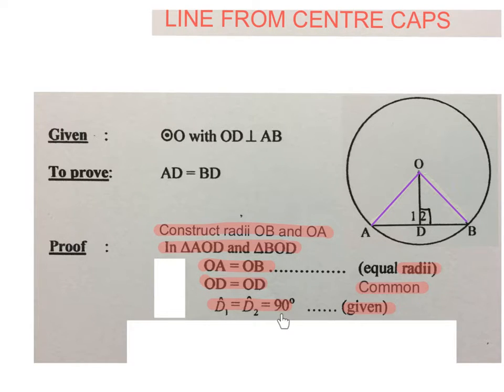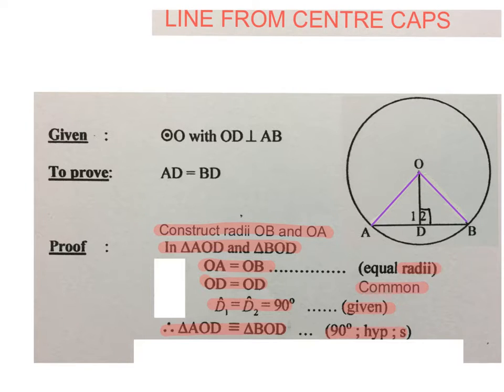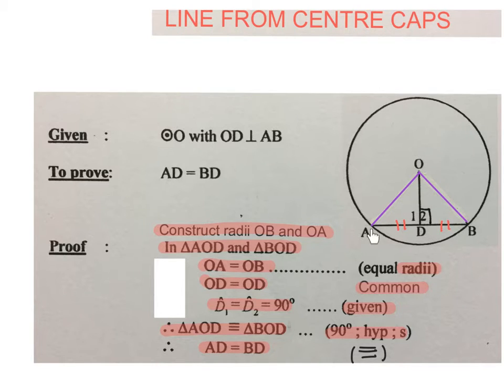D1 is equal to D2 is equal to 90 degrees. It was given to us. Therefore, triangle AOD is congruent to triangle BOD. Your reason is 90 degrees hypotenuse side. That means these two triangles are 100% the same. Then we say, AD is equal to BD. So that AD is equal to BD. And it's because of congruency. You don't have to write that. You just proved congruency. I like to do that.